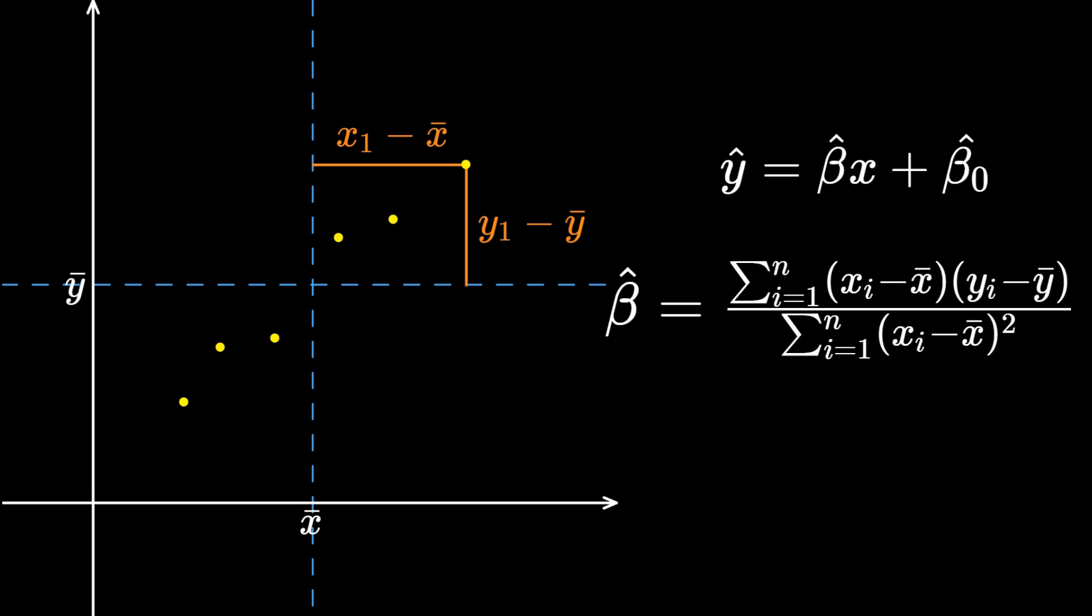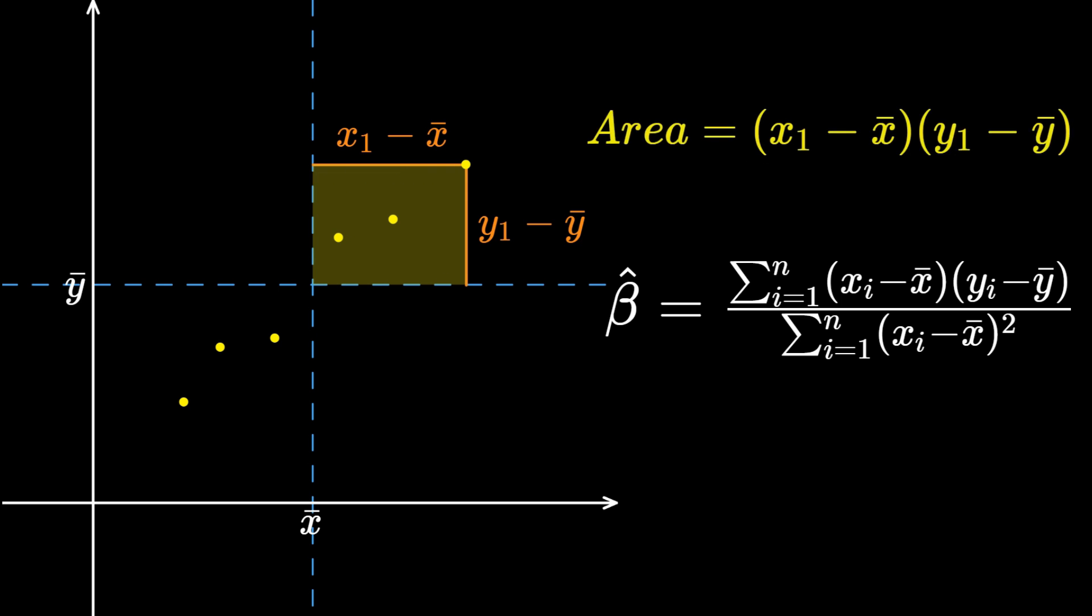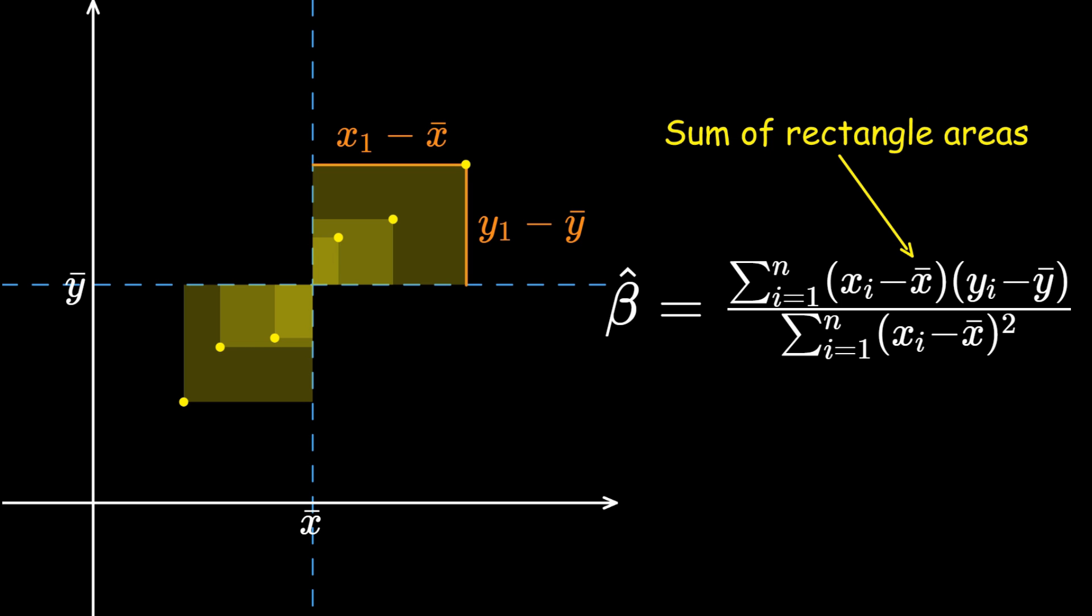Now, these four lines form a rectangle, and the area of this rectangle is given by x1 minus x-bar times y1 minus y-bar. If we do this for all of the data points, forming rectangles with the centroid and adding up the areas, the total area of all these rectangles will be exactly equal to the numerator. Keep things in mind for a second, because now we're going to tackle the term in the denominator.